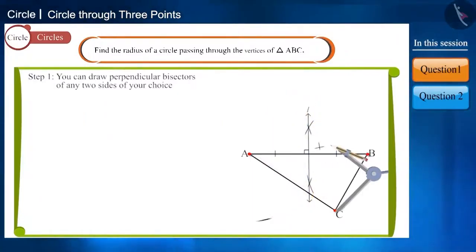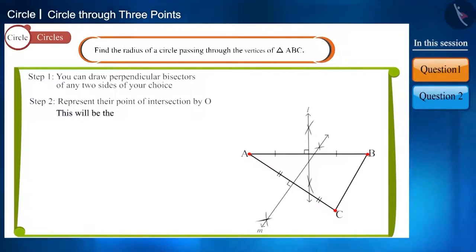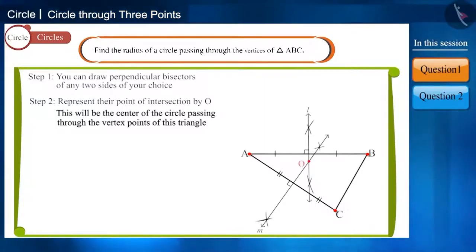You can draw perpendicular bisectors of any two sides of your choice. Their point of intersection will be the center of the circle passing through the vertex points of this triangle. Now, let's consider this intersection point as O and join OA, OB and OC in this manner.